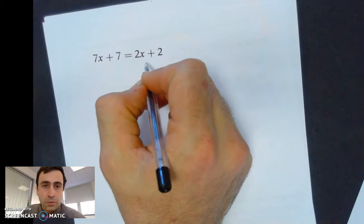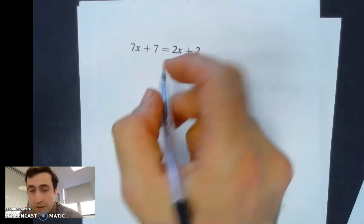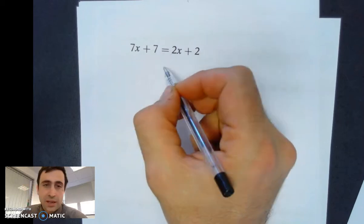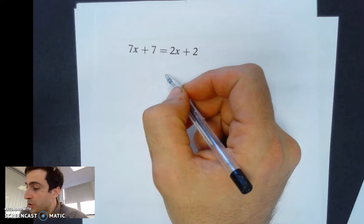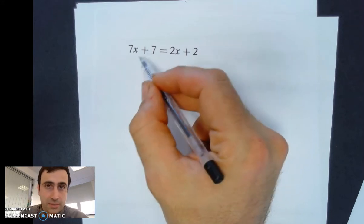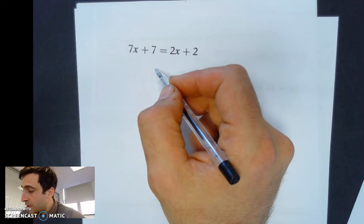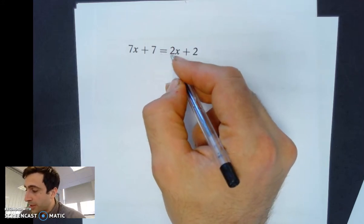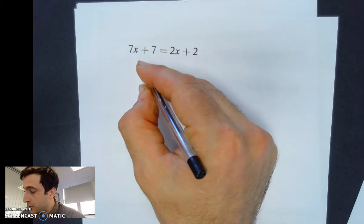What we want to do is we want to get all of the x's to one side, all of the numbers to the other. The most common question I get is, does it matter which side you put the letters on? No, it doesn't. One might be easier than the other, but it really doesn't matter. In this case, I'm going to move the x's to this side and the numbers to this side.